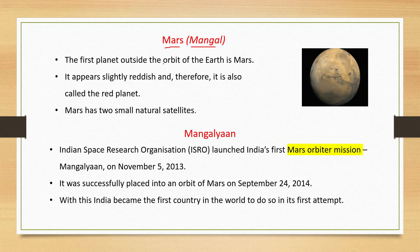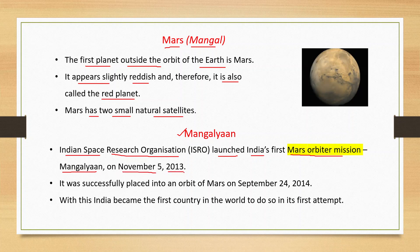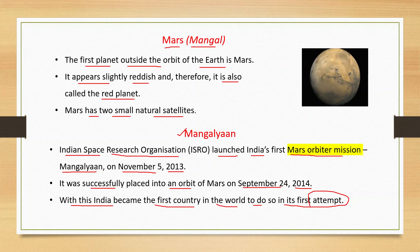Mars, also known as Mangal, is the first planet outside the orbit of the Earth. It appears slightly reddish and is therefore also called the red planet. Mars has two small natural satellites. India's space research organization ISRO launched India's first Mars Orbiter Mission (MOM), called Mangalyaan, on November 5th, 2013. It was successfully placed into an orbit of Mars on September 24th, 2014. With this, India became the first country in the world to do so in its first attempt.